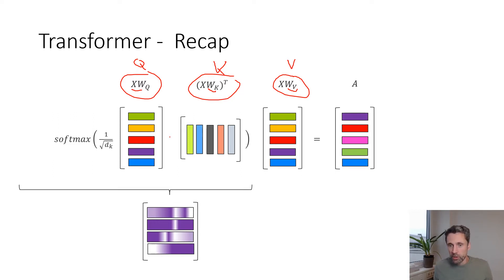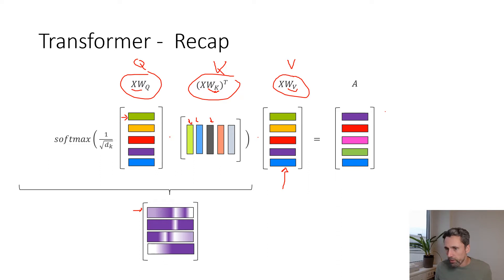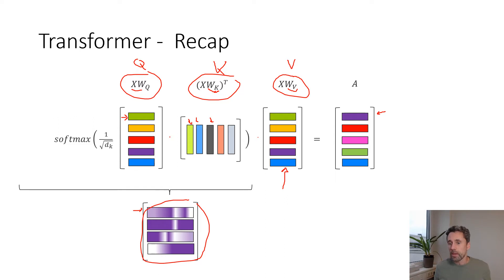The first multiplication produces this attention map. For a key — let's say the first token — you multiply that by all the different tokens in that sequence. They look different because they are embedded with a different matrix. By multiplying these together, we obtain that first line, which in the next multiplication defines how to mix these values for the first token. You multiply that matrix by that matrix, which tells you how to mix these values to obtain a new set of tokens. These are then pushed through the normalization and MLP layers as described in the first video.